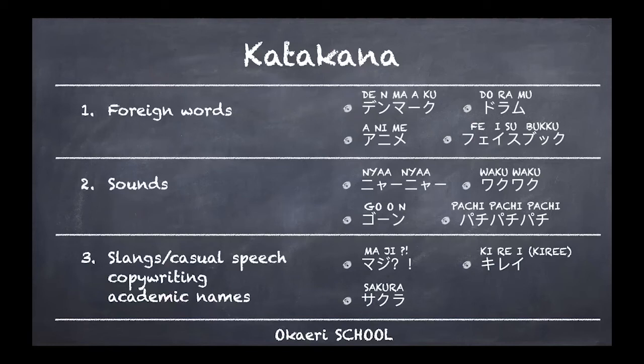So when do we use katakana? Number one: foreign words. For example, Denmark becomes 'Denmāku,' drums becomes 'doramu,' anime becomes 'anime' or 'animēshon' for animation, and Facebook becomes 'Feisebukku.' Those are foreign words not originally Japanese — so we write foreign countries' names, foreign people's names, places, products, and brands in katakana.